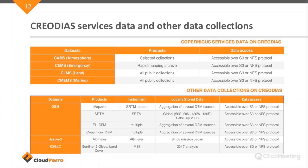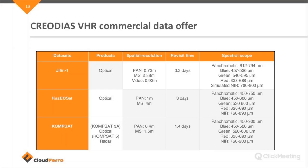Another available data collection is S2GLC — Sentinel-2 Global Land Cover. This dataset was developed by the Space Research Centre, Polish Academy of Sciences, and represents the land cover of Europe. It was produced in 2017 as a thematic classification based on Sentinel-2 satellite data. These are datasets you can access completely for free, download them, or access them locally on virtual machines.